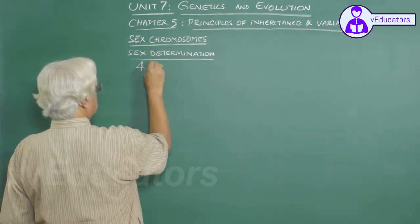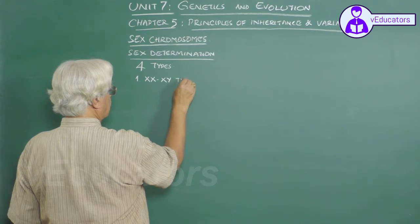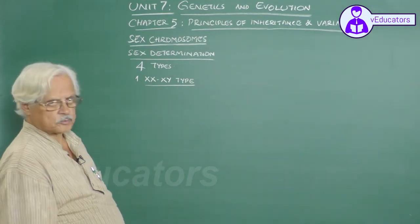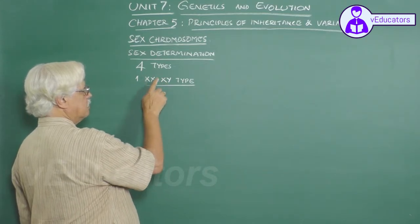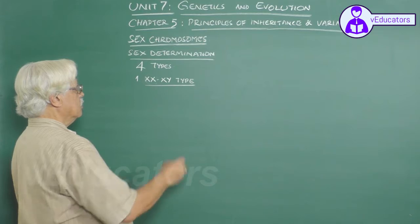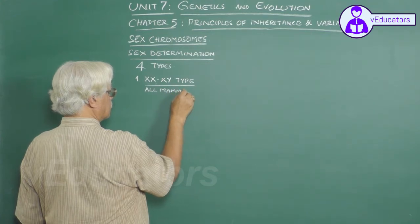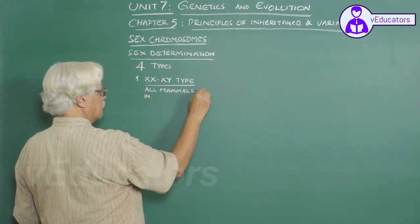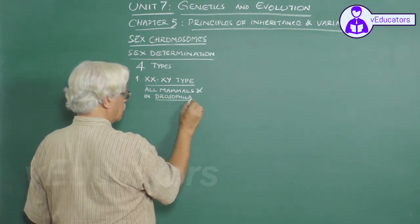The first one is called XX/XY type. In this type, the sex chromosomes of the female will be X and X, and the sex chromosomes of the male will be X and Y. This type of sex determination is observed in all mammals and in some insects, particularly in Drosophila.